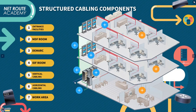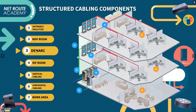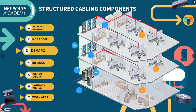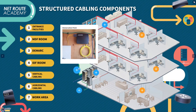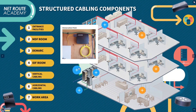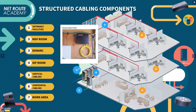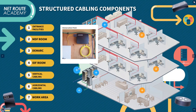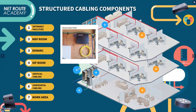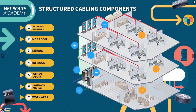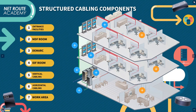Next is the demarcation point. This is the part where the ISP's network ends and the organization's network begins. Anything beyond this demarcation point already belongs to the organization — those are the devices you will be responsible for handling.